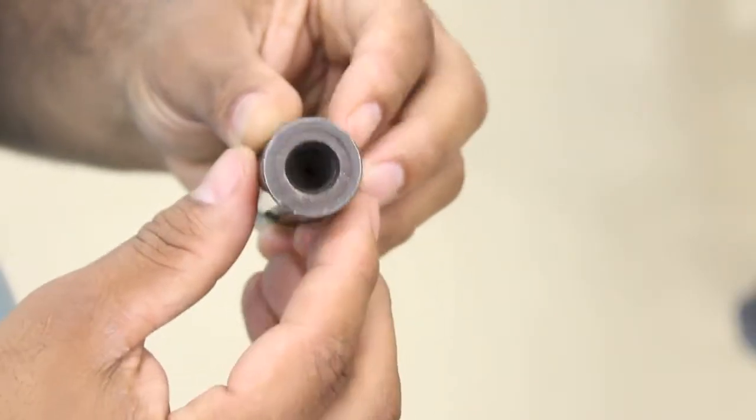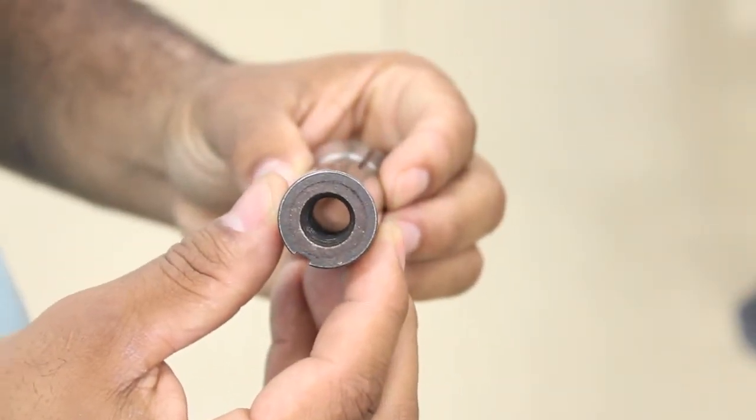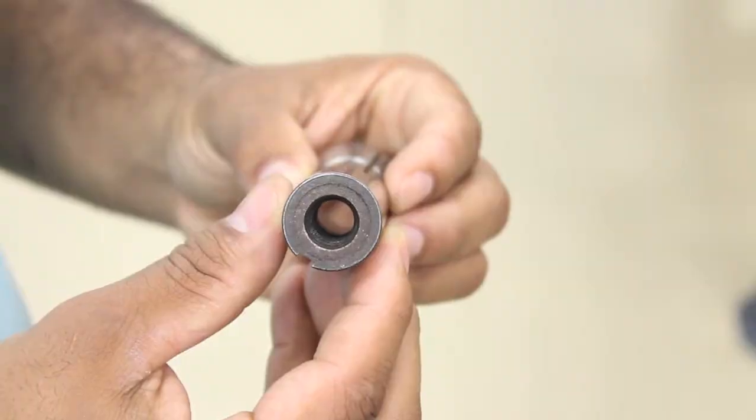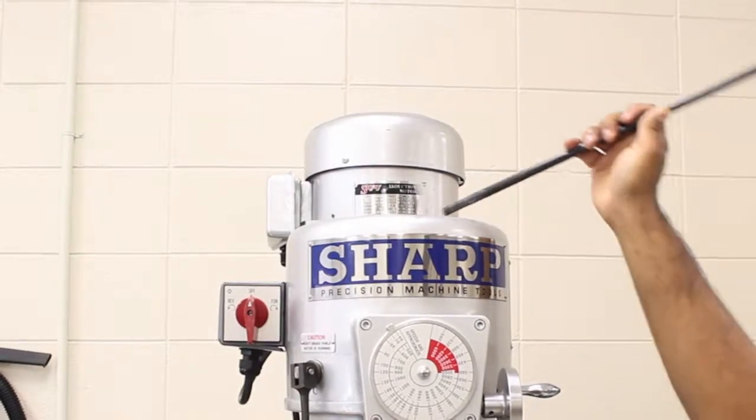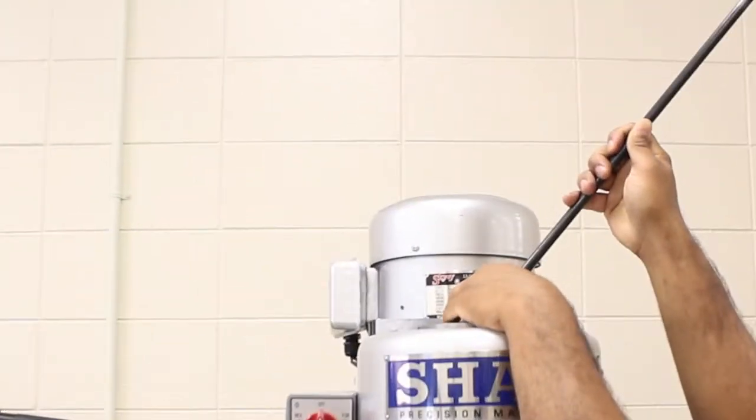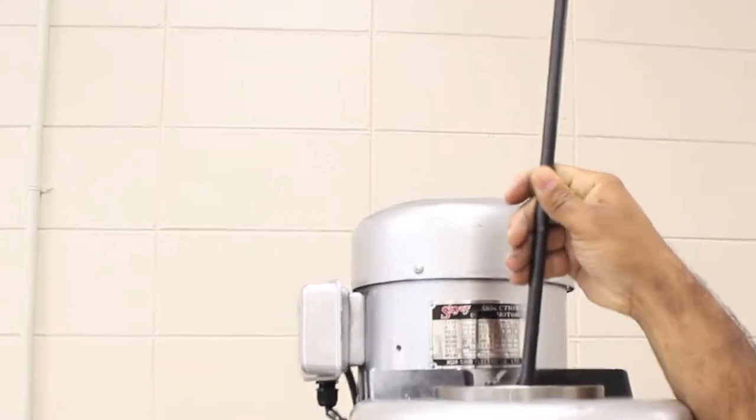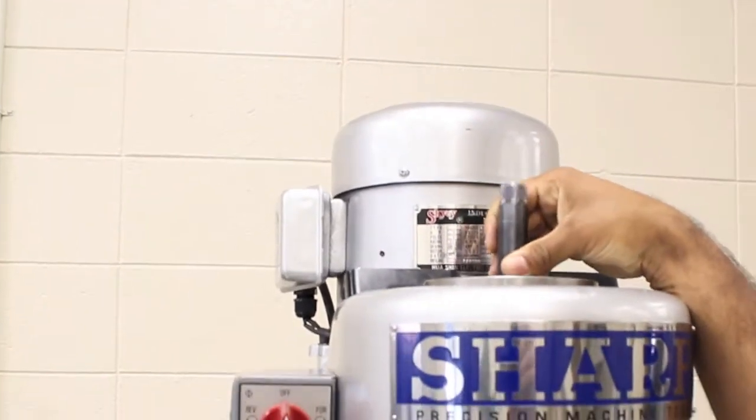The threaded end of the collet facilitates the need to fasten the collet into the spindle. This is done by fastening the threaded rod which extends from the top of the machine down into the spindle. As the draw bar is advanced into the threaded portion of the collet, it draws the collet into the spindle.